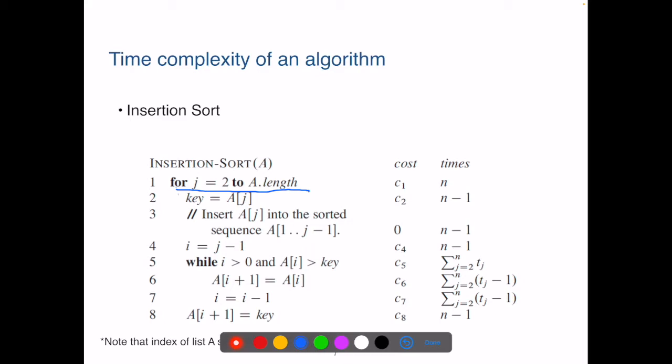Now let's look at instruction five through seven. This is a while loop nested inside the for loop. We notice that the number of times depends on the input list. If the key is already in the right place, we only need to check the while condition once. On the other hand, if the key is smaller than all the numbers in the sorted left portion, we need to make j minus one swaps. Let's say the while condition is checked for tj times in the jth iteration of the outer for loop. So in total, line five will be executed this many times.